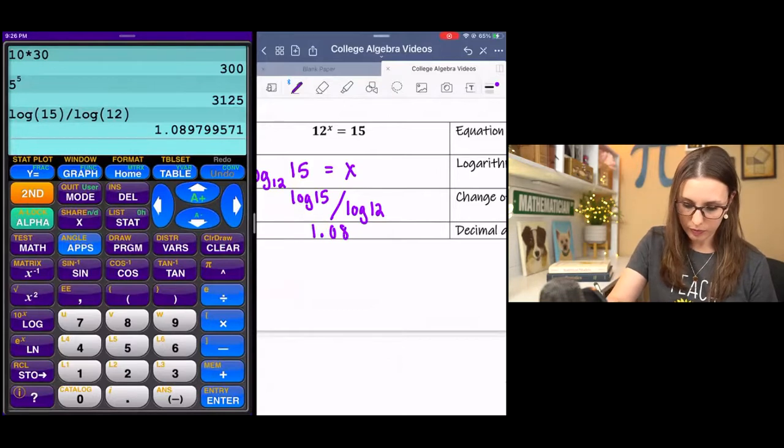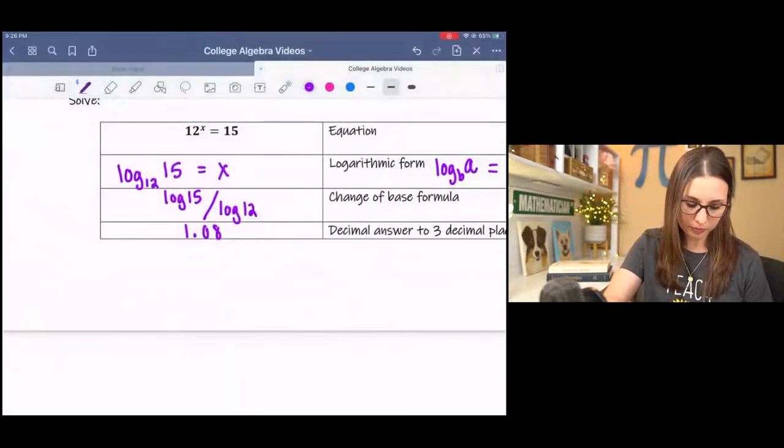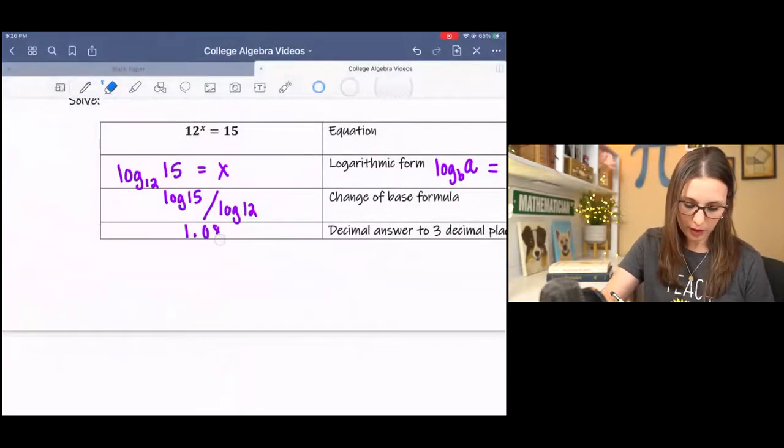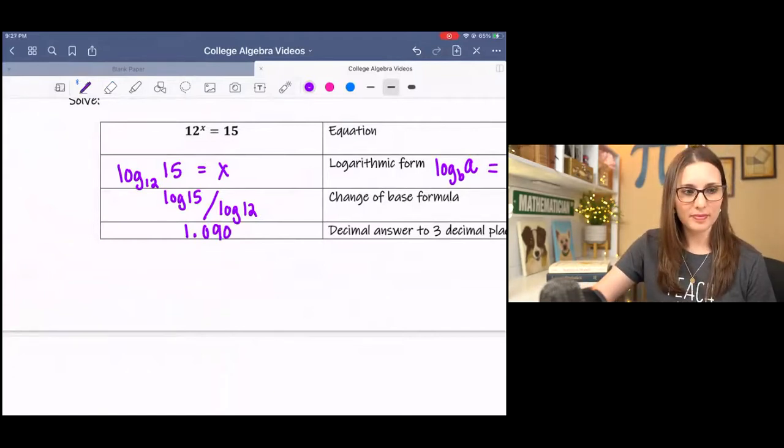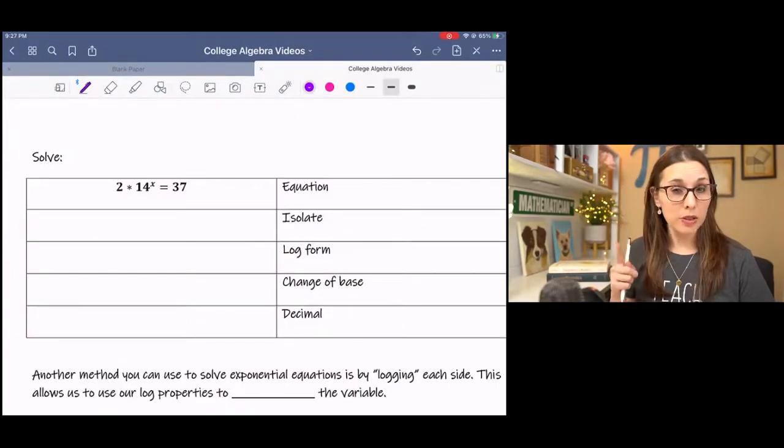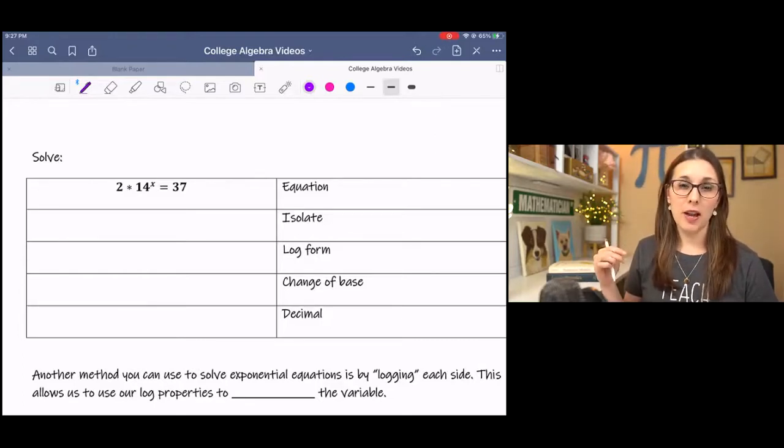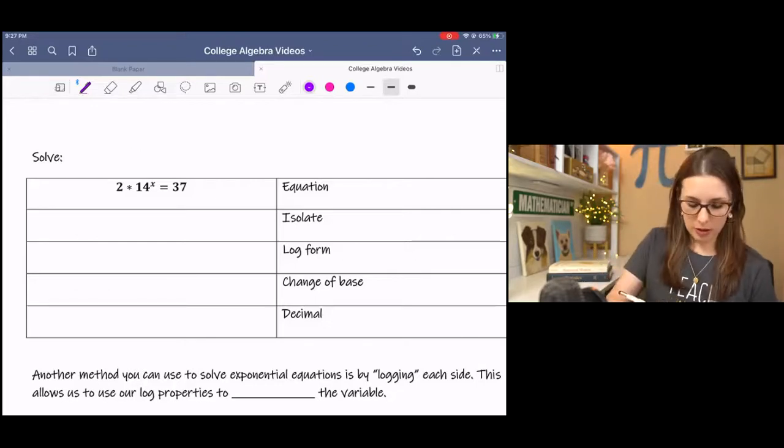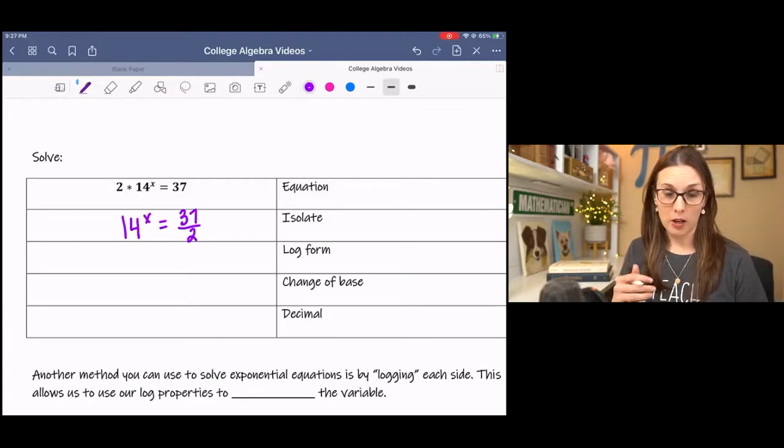I have to go back, I rounded wrong, because it's 897. So we would go 890. Let's try the next one using the same process. This one's a little bit different because there's a 2 in front. So if we can isolate that 14 to the x, then we can use our properties that we're familiar with. So we're going to divide both sides by 2. And then we can go from there.